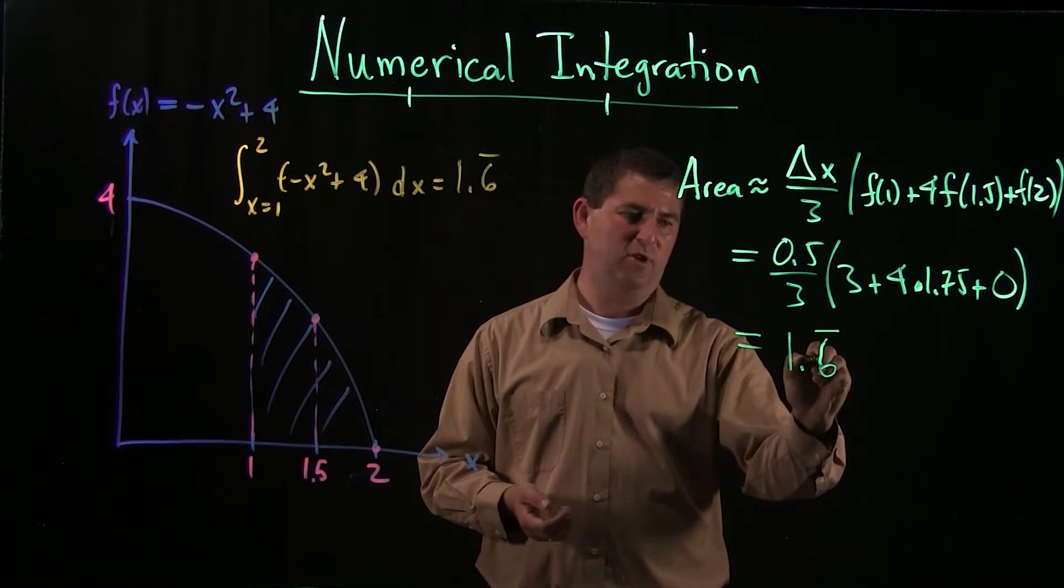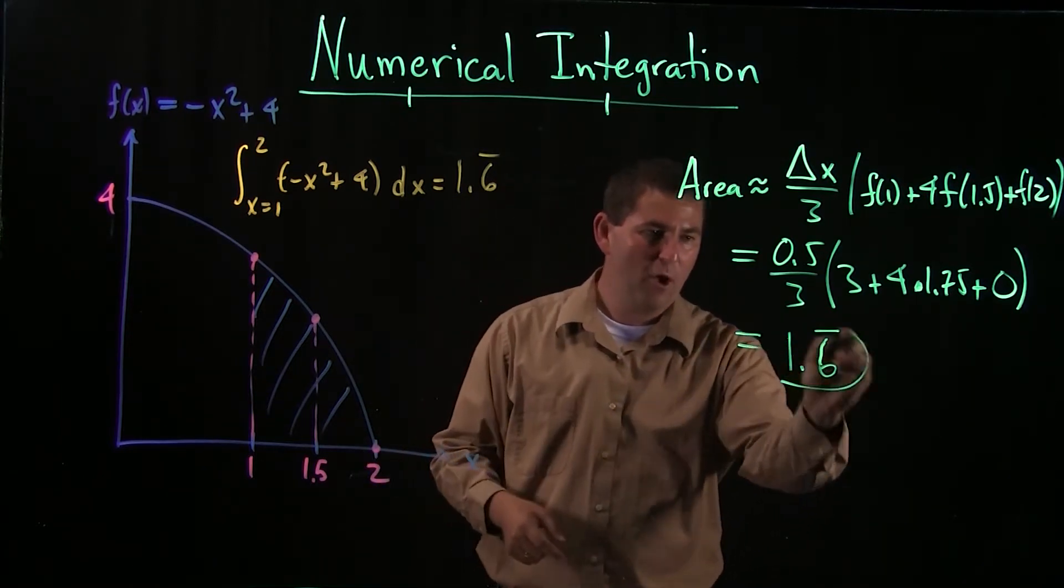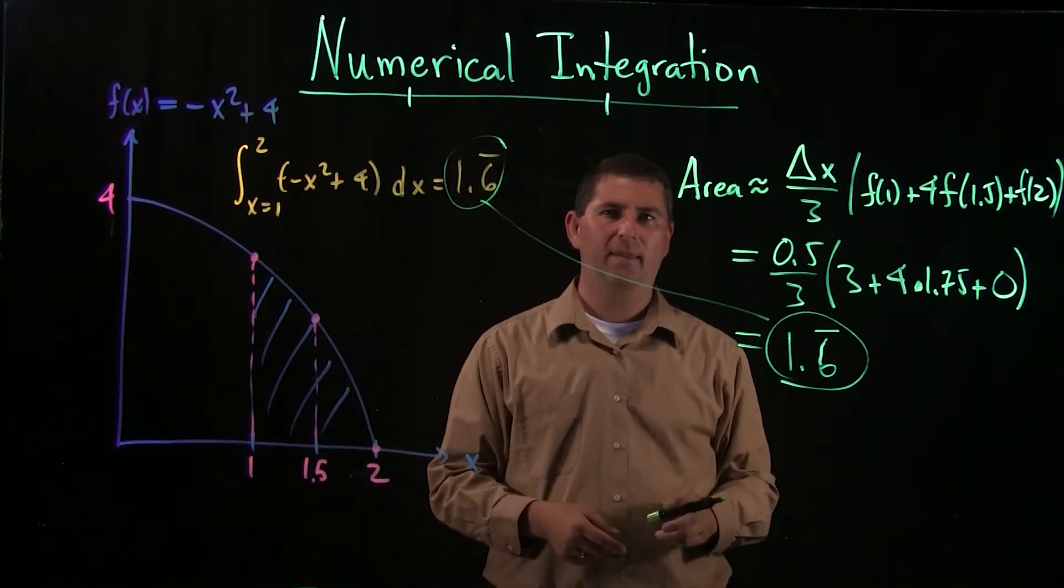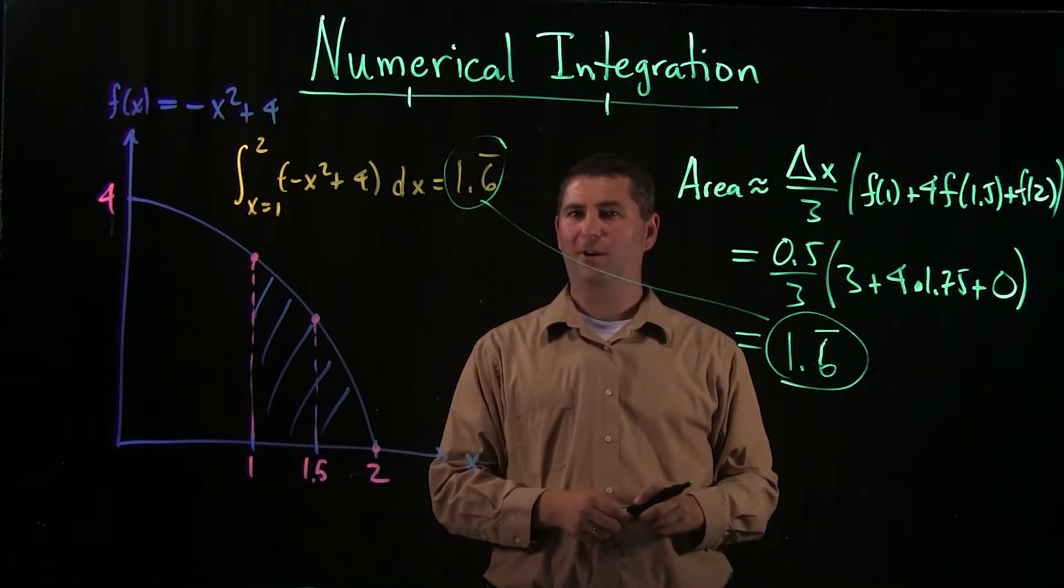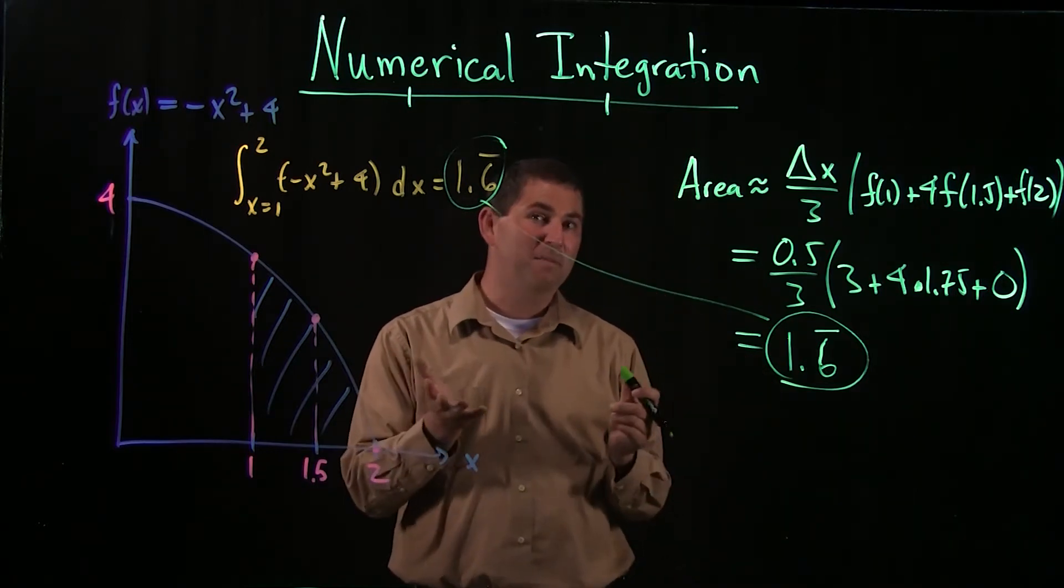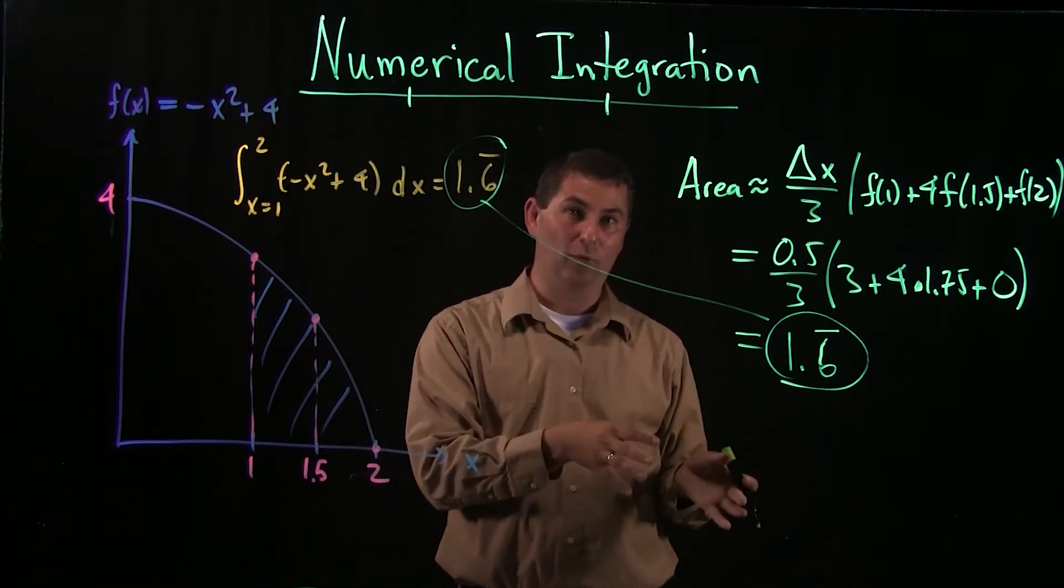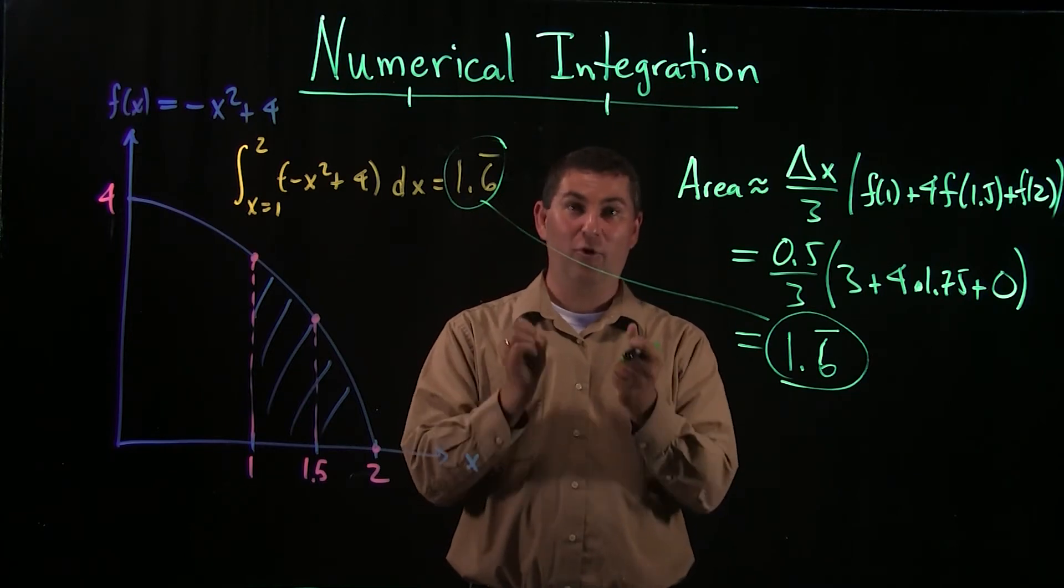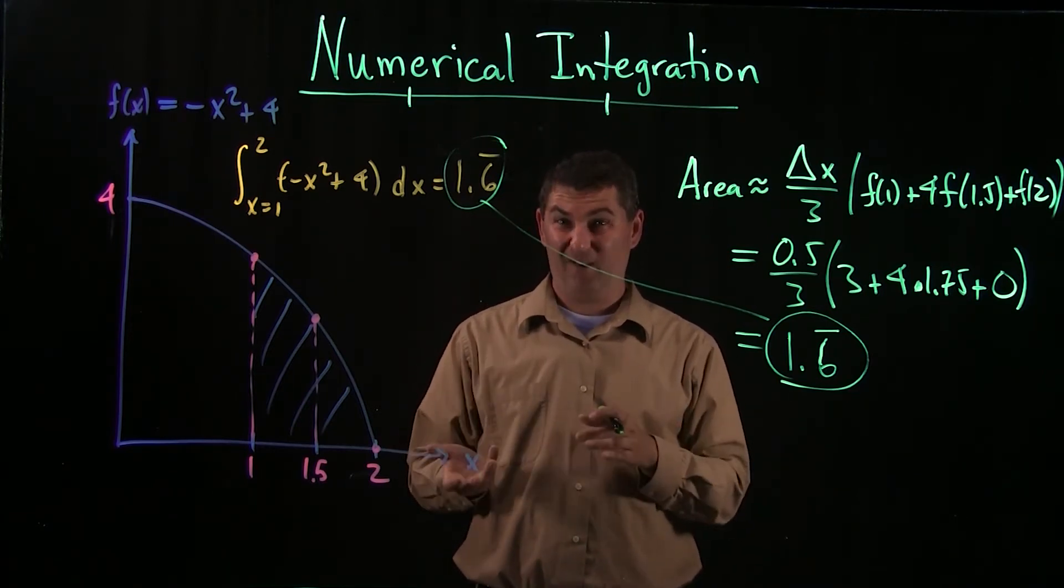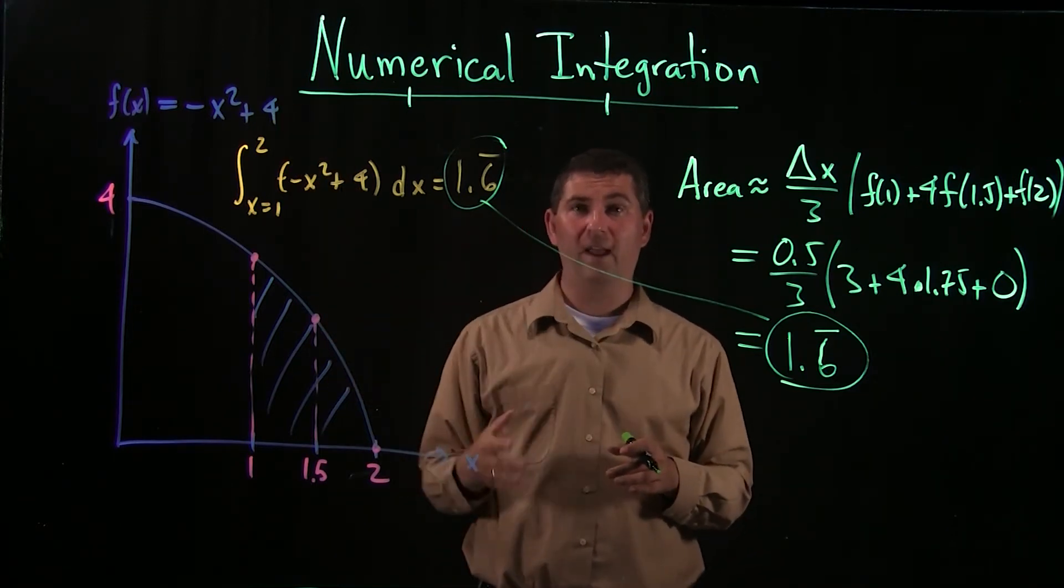And it ends up equaling 1.6 repeated. It's not just an approximation. It's the exact answer. Those are the same thing. That's really peculiar. So it's amazing, but it turns out, and we'll see why in the next video, it turns out that Simpson's rule will always be correct if the degree of the polynomial is small enough.